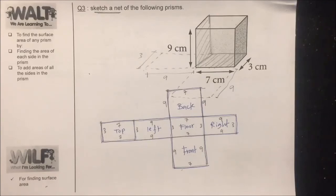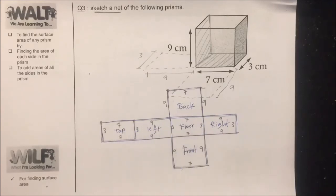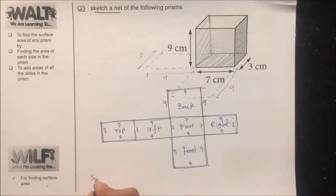Now can you find the surface area using the net? Consider the net as a 2D object and find the area of each shape in it, of each rectangle in it, and then add them.